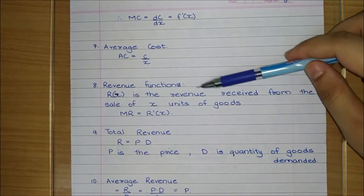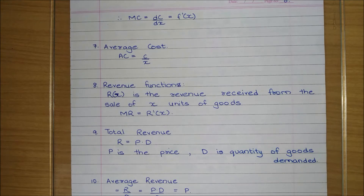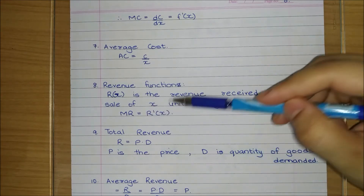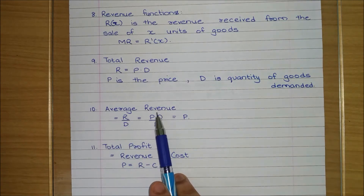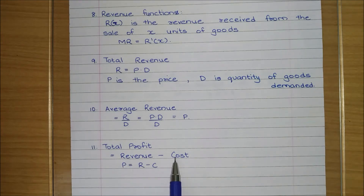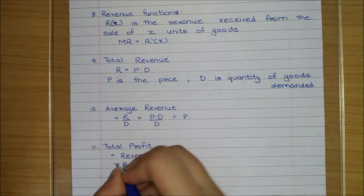The revenue function R(x) is the revenue received from the sale of x units of goods. Revenue is all the money coming in — it includes profit. However much money the customer gives you is called revenue. Marginal revenue equals the differentiation of revenue with respect to x. Average revenue equals total revenue divided by demand, which is p·d divided by d, so d cancels and we get just p. Profit is revenue minus cost: P = R - C. To avoid confusion between P for price and P for profit, we sometimes denote profit as π.